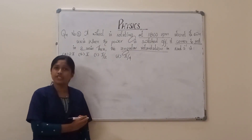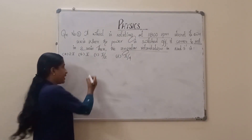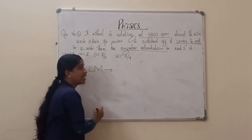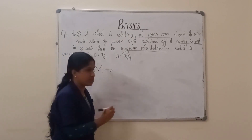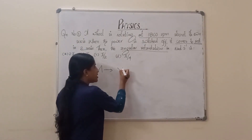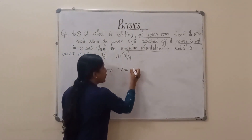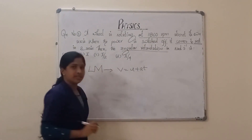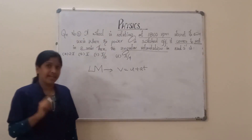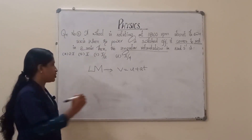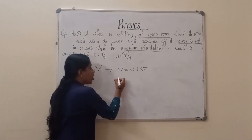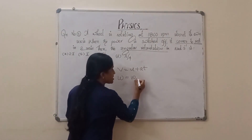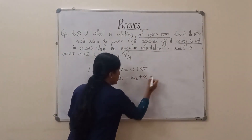In linear motion, we have the equation of motion as V = u + at. Similarly, in rotational motion, we have ω = ω₀ + αt.